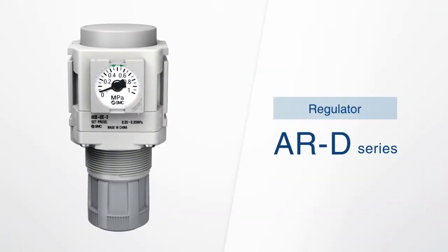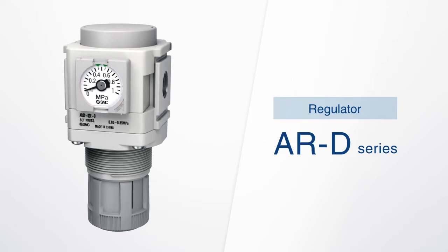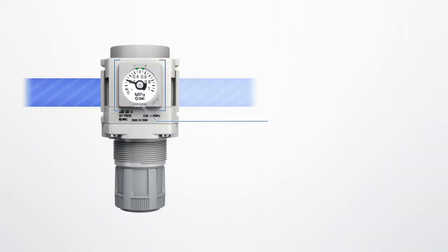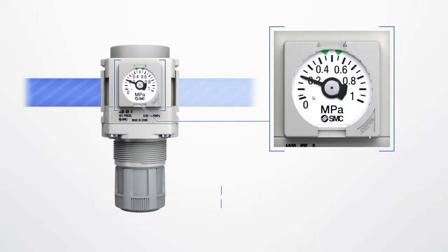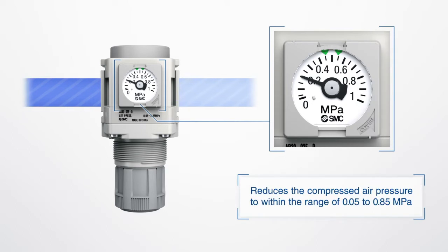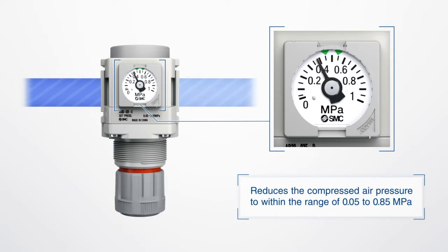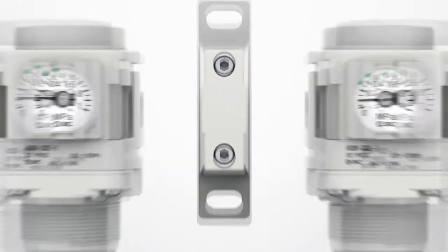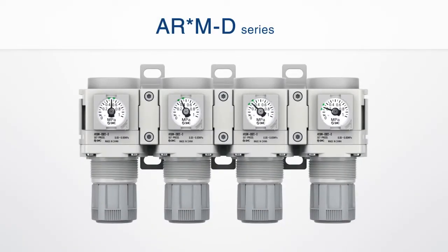The ARD series regulator reduces compressed air pressure down to between 0.05 and 0.85 MPa. Multiple regulator units can be connected together.